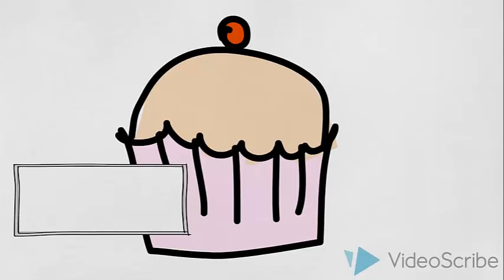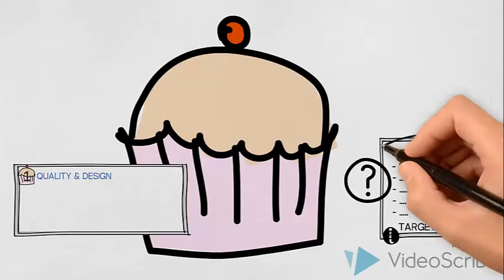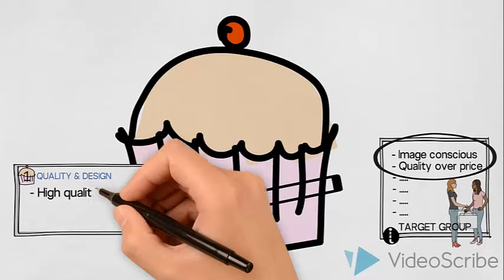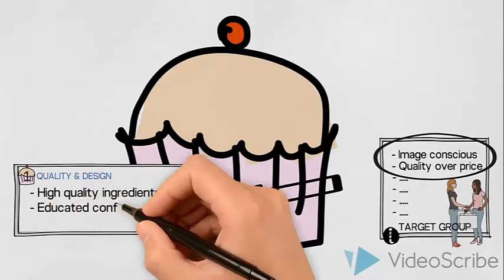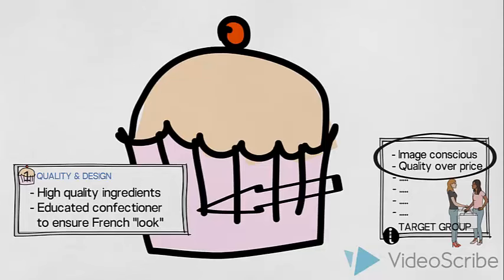Firstly, quality and design. We will look for clues in our target group description. Knowing that our target group values quality over price, we would decide that we will use high quality ingredients in our cakes and desserts and that we should hire a trained confectioner to ensure the French look of the cakes.